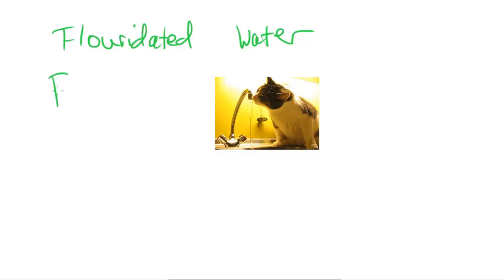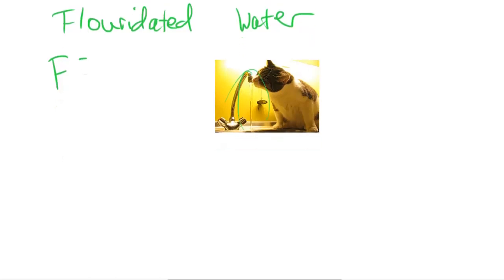Fluoride ions, so F minus, are often added to water as well. The reason for this is because there's some evidence to suggest that fluoride ions when they're added to drinking water, like this cat is drinking right here, the risk of getting tooth decay decreases. Because of this, some scientists are in favor of fluorine being added to water to produce fluoridated water.